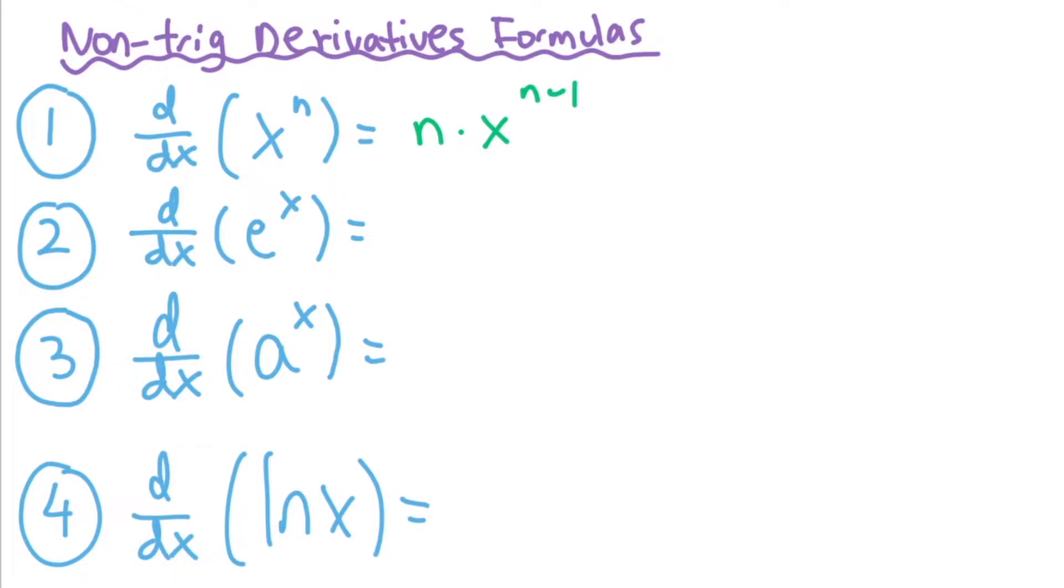And then you see e to the x is just going to be e to the x. So anytime you have e to the x, like e to the 2x, e to the 3x, it's always going to be the same. So if you have e to the 2x, the derivative of that is just going to be e to the 2x. But are we forgetting something? Yes, we are. Remember, there's always chain rule. So 2x, the derivative of 2x is 2.